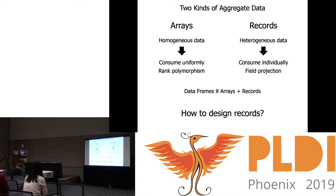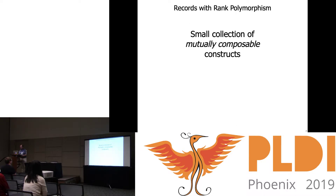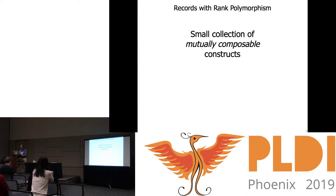So I asked: how should I design record data types to actually be good for integrating with rank polymorphism, so that I can have nice easy data frames without special library support? The key part of the answer turns out to be that you need a small collection of mutually composable constructs in order to make everything work nicely.